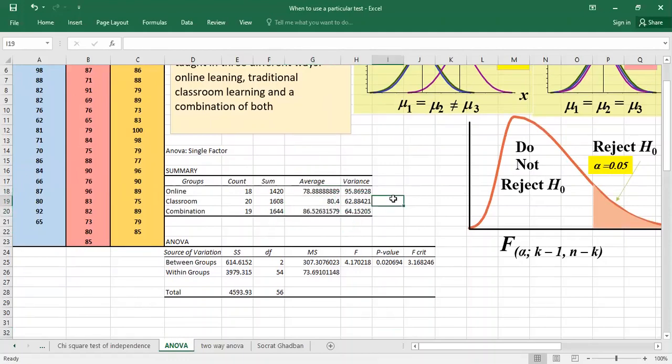One thing that you have to know that we're having an assumption before that we're running ANOVA that the different groups they are having similar variances or equal variances.